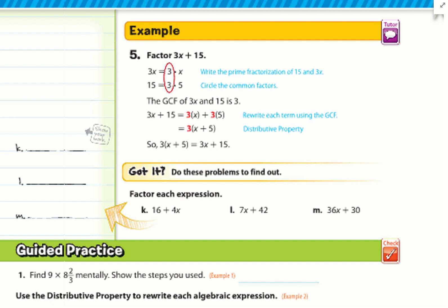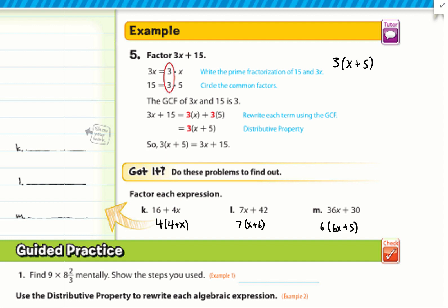Example 5: Factor 3x + 15. Factors of 3x: 3 times x. Factors of 15: 3 times 5. The GCF is 3, leaving x + 5 inside the parentheses: 3(x + 5). For practice problems k, l, and m: k gives 4(4 + x), l gives 7(x + 6), and m gives 6(6x + 5).